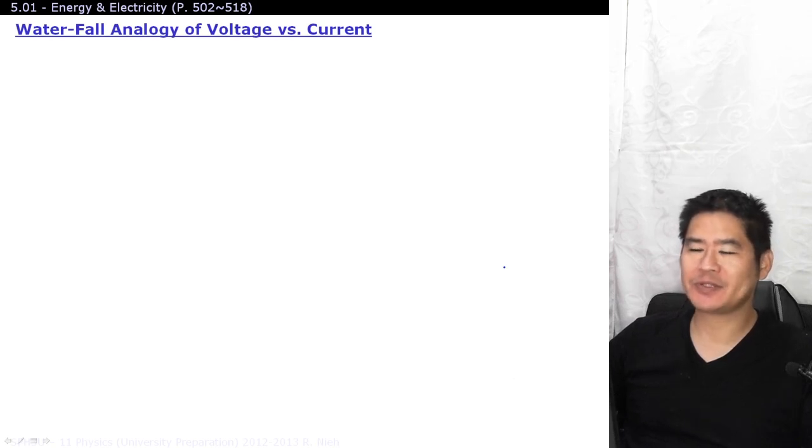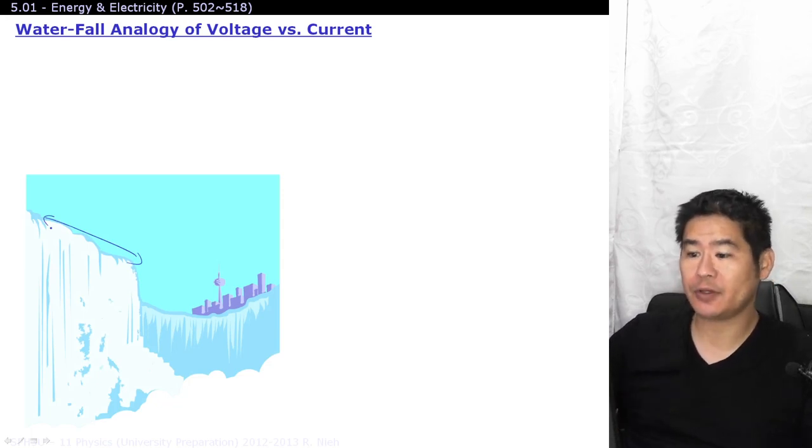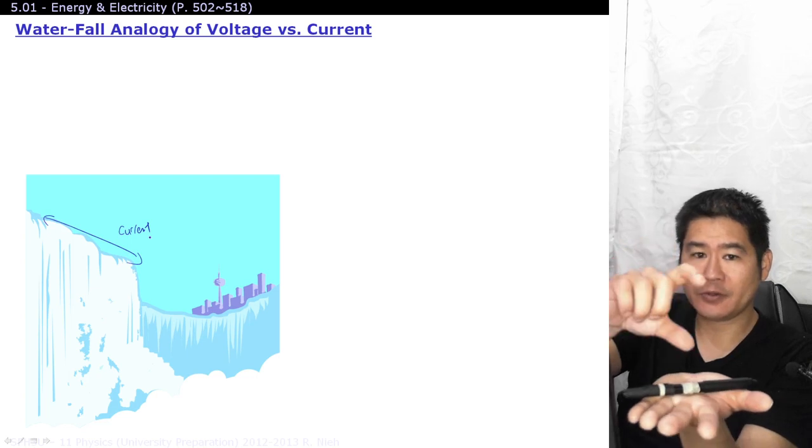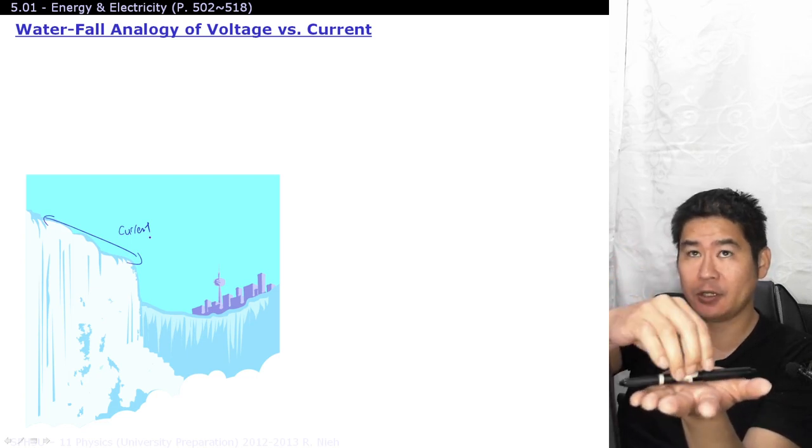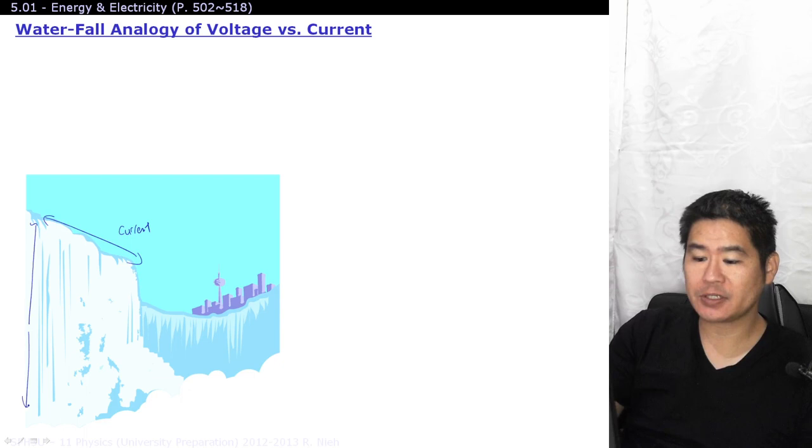Here's a classic representation of the difference between voltage and current. We often represent it with Niagara Falls, where the width of Niagara Falls describes the quantity of water that's falling, or the quantity of electrons that are flowing. In other words, the width represents the current. And the voltage is how much energy there is per droplet of water. And if you think about it from the perspective of gravity, if it drops very small, then there isn't much energy per electron. Meanwhile, if it drops a lot, there's a lot of energy associated with that individual electron. So the height of Niagara Falls represents the voltage.